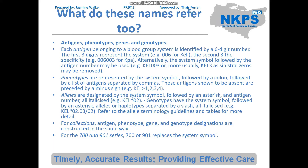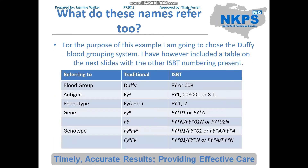For collections, antigen, phenotype, gene and genotype designations are constructed in the same way. There is also a different series — the 700 and the 901 series — which replace the system symbol, but you won't deal with those very much.